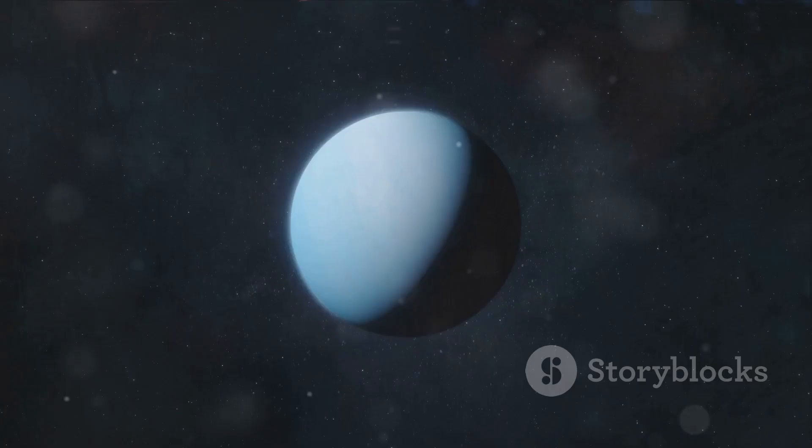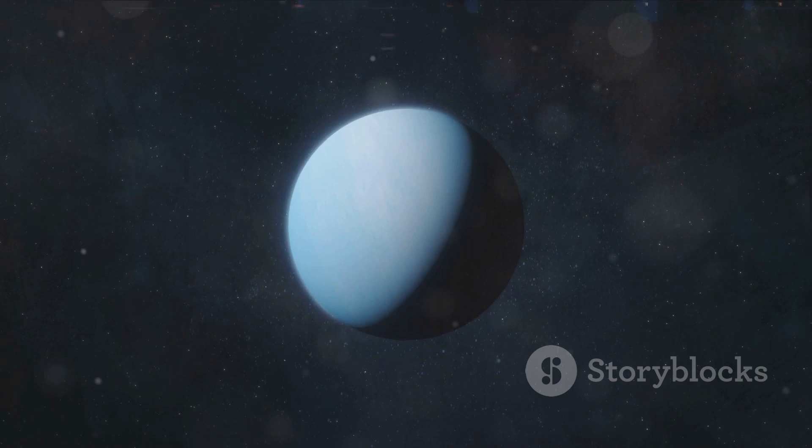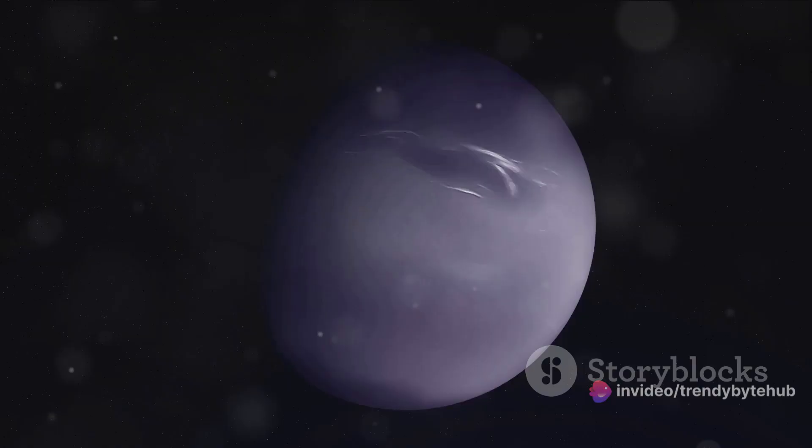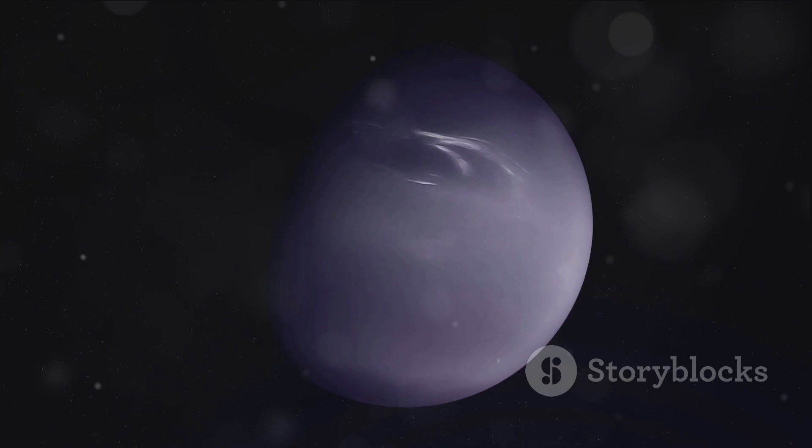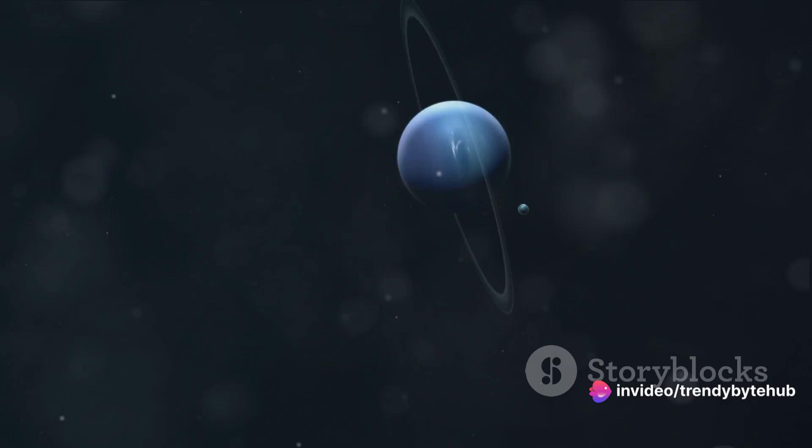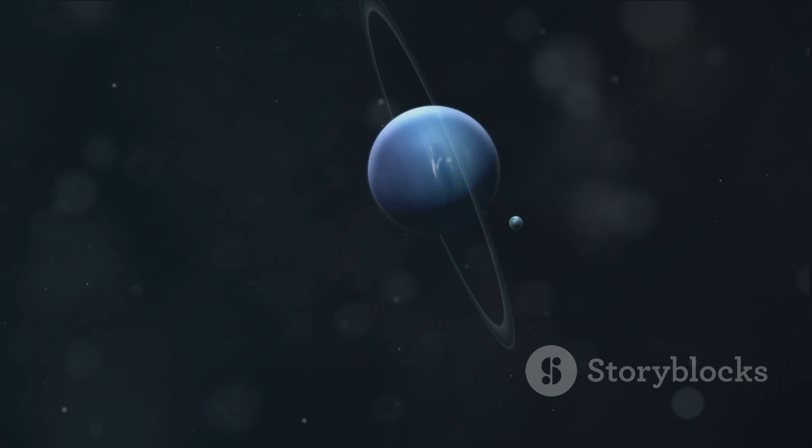But perhaps the most intriguing findings relate to Neptune's internal structure. While we've known for some time that Neptune, like other gas giants, is primarily composed of hydrogen and helium, recent studies suggest that this planet may have a much more complex and interesting internal makeup. The presence of a strange, hot substance under Neptune's cold exterior has sparked theories about a possible diamond rain within the planet. Yes, you heard it right. Diamonds, created by the immense pressure and heat inside Neptune, might be raining down in its core.